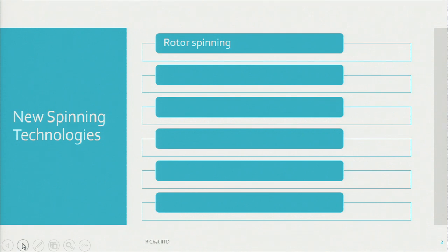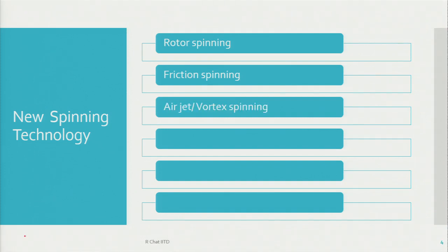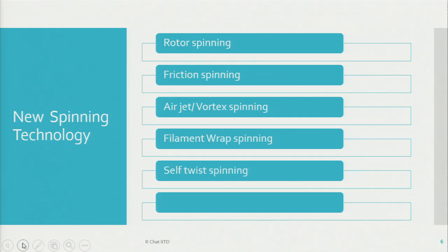Rotor spinning is a very successful spinning system and you will learn about it in detail. This will be followed by another interesting spinning system called friction spinning. The third one will be air jet and vortex spinning. The next one is filament wrap spinning — that is wrapping by a filament. Then comes self-twist spinning, and there are a few more put into the category of 'others.' They are really not that successful, but they have been designed and developed, and who knows — in future they may be of great use to us.